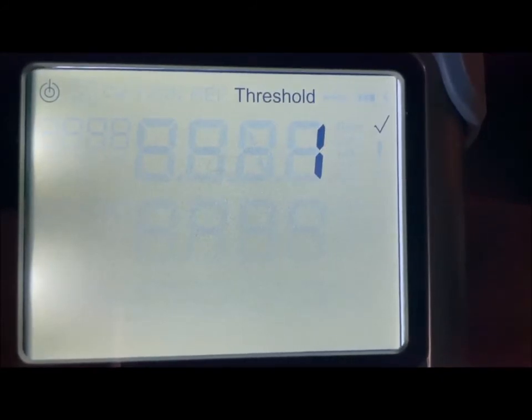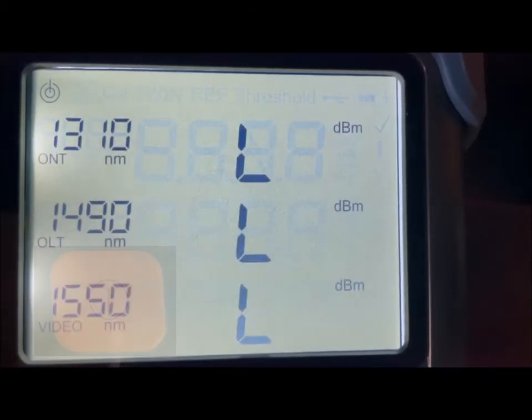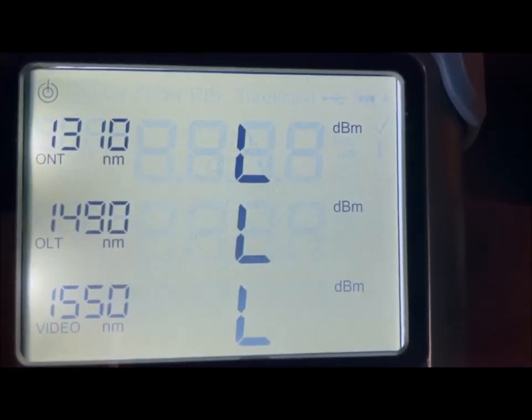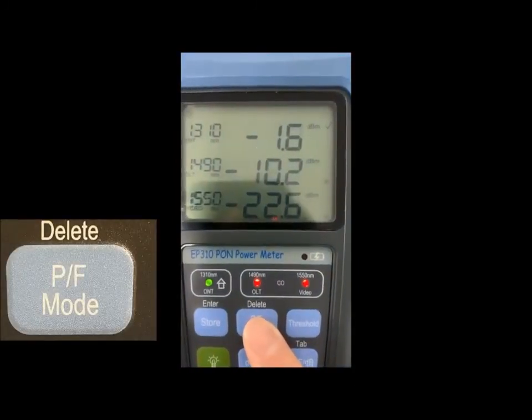To exit the threshold setting menu, press the orange key. From the absolute measurement mode, select the PF button, which means pass-fail.